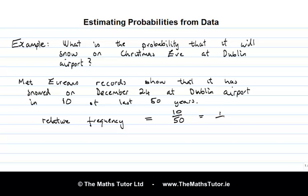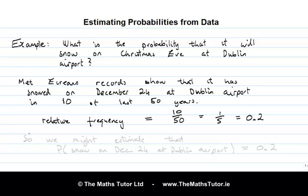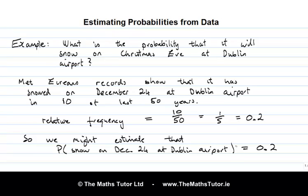The relative frequency of snow on Christmas Eve is 10 over 50, which equals 1 over 5, or 0.2. We use this as an estimate of the probability. So we might estimate that the probability of snow on December 24th at Dublin Airport is 0.2. This is a good way to estimate the probabilities of real life events where theoretical reasoning only gets us so far, and we have to resort to data to find probability estimates.